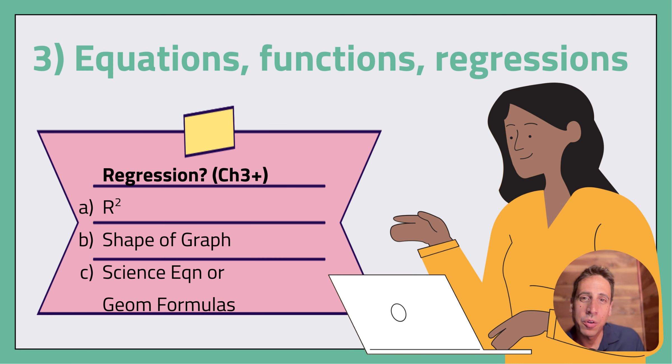Third, then you talk about any equations or functions or regressions that you are utilizing. Starting in chapter three and later, you need to do three different parts. So it needs to be consideration for r-squared values. And then what is the shape of the graph? And then are there any science equations or geometric formulas that you're using? So how did you choose your regression? Well, there are three different conversations you need to have. R-squared conversation, a shape of graph conversation, and a science equation or formula conversation.